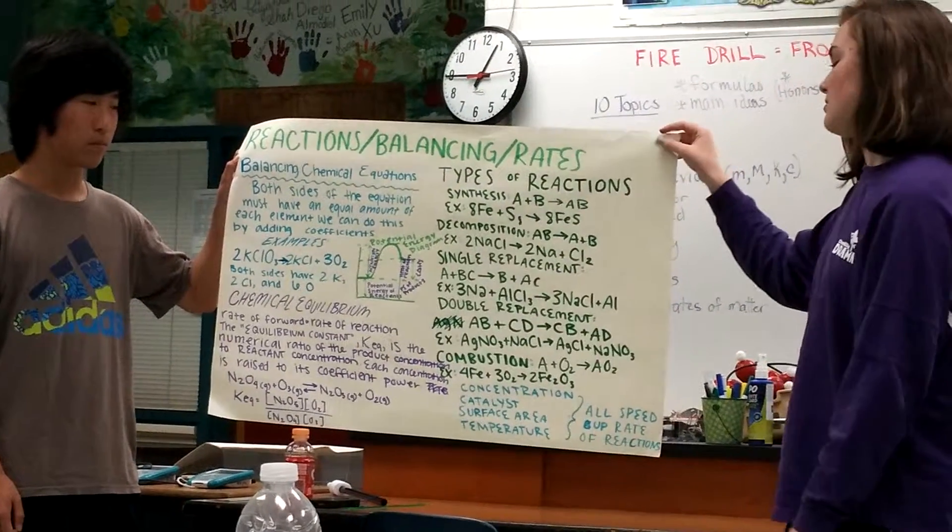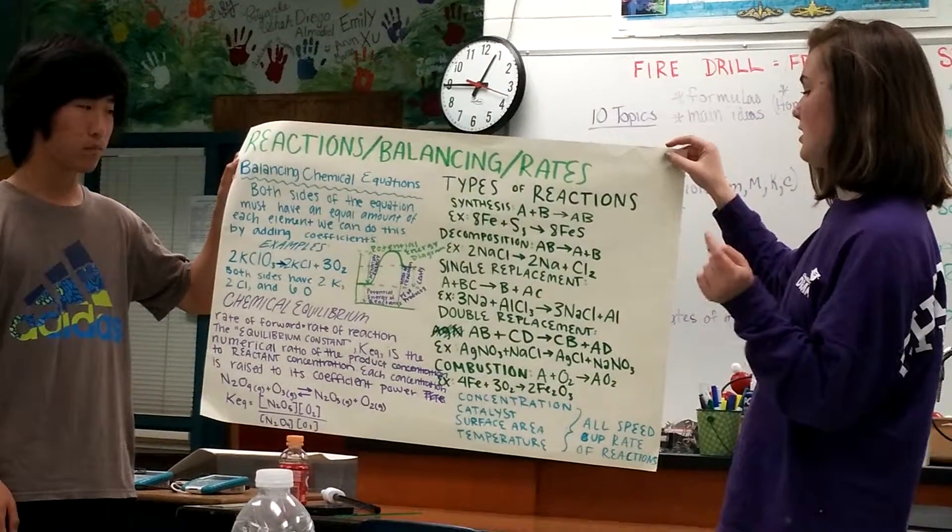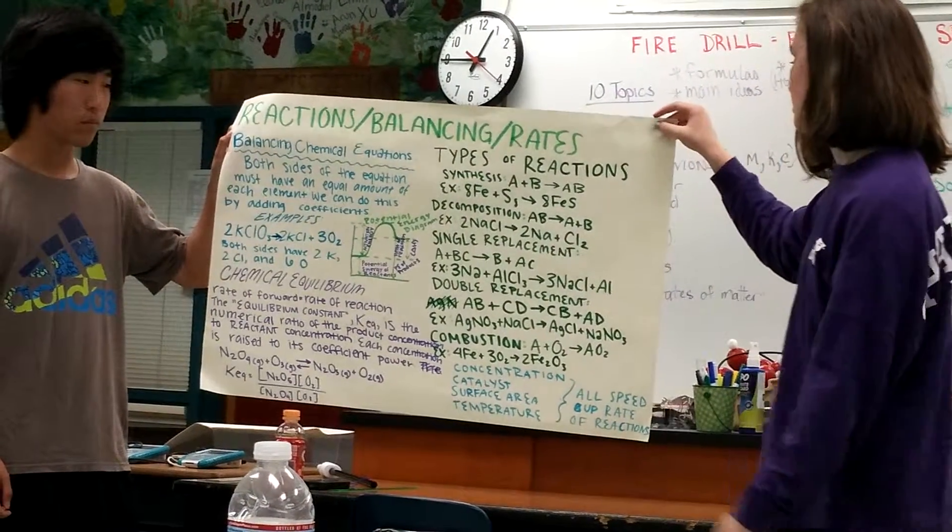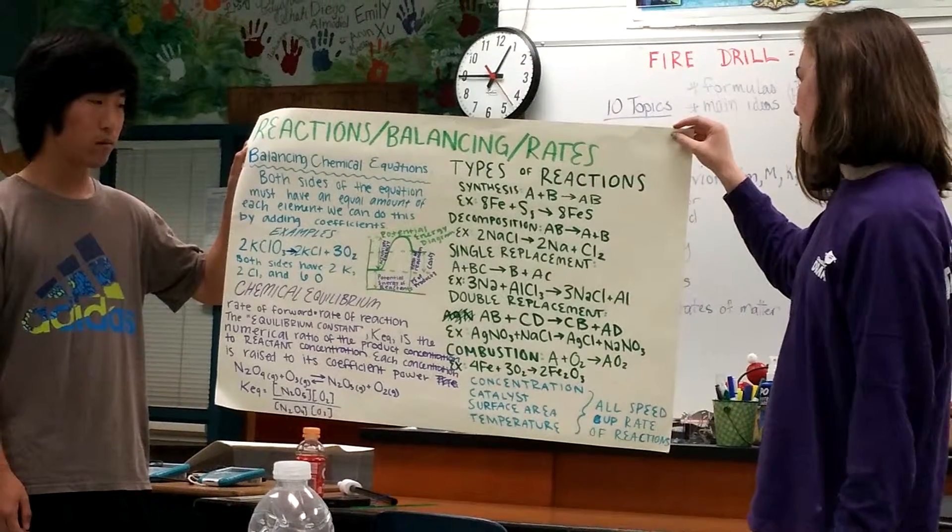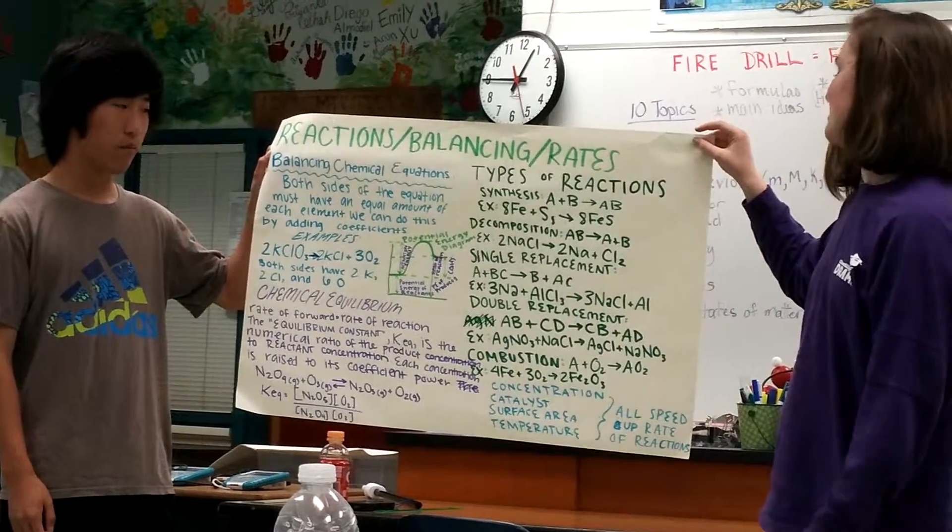So the next type is a single replacement, which is A plus BC is B plus AC. And an example of that would be 3 Na plus AlCl3 is 3 NaCl plus Al.